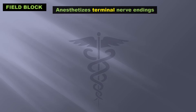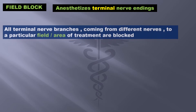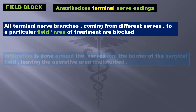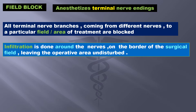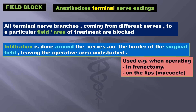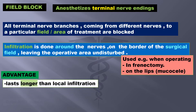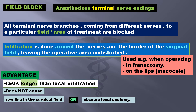Another commonly used term is field block. It also anesthetizes terminal nerve endings. Here, all terminal nerve branches coming from different nerves to a particular field or area of treatment are blocked. Infiltration is done around the nerves on the border of the surgical field, nearing the operative area. This block is used, for example, when operating in frenectomy on the lips. The advantage is that it lasts longer than local infiltration and does not cause swelling in the surgical field or obscure local anatomy.